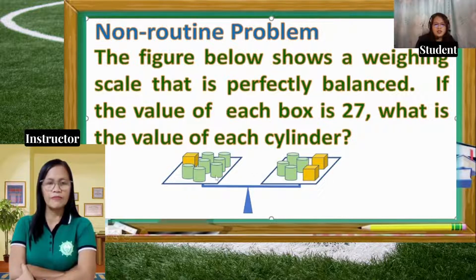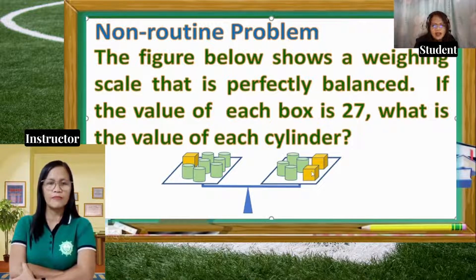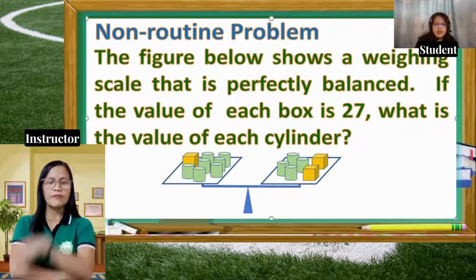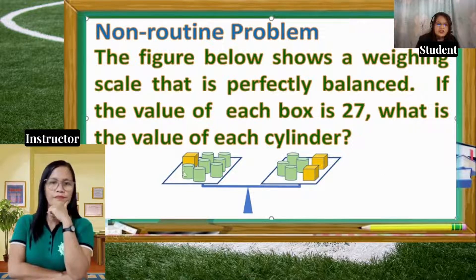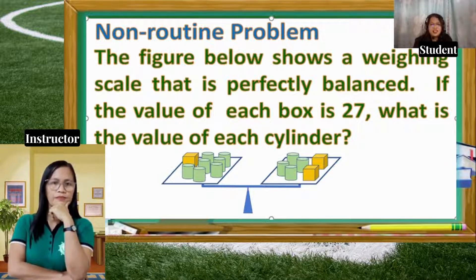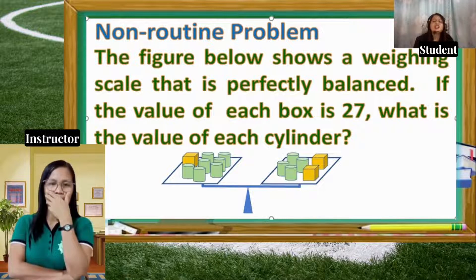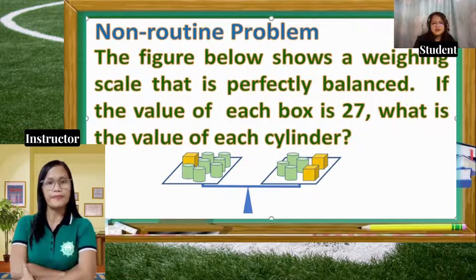On the other side is 1 box. So this box is equal to the value of the weights of these 3 cylinders. Each box is 27, so 27 divided by 3 — because we have 3 cylinders — gives a quotient of 9. So the value of each cylinder is 9. That's the sample of the non-routine problem.